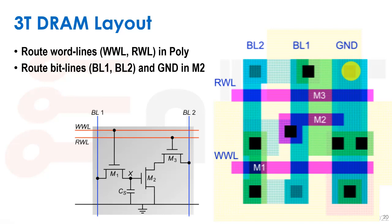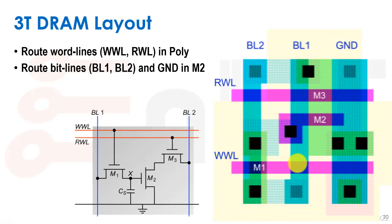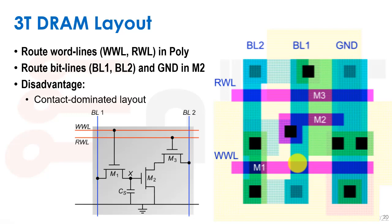Here's a layout of the 3T DRAM. The read word line and write word line are routed in poly layers, the bit lines in metal two, with internal connections in metal one. The disadvantage is that we have a lot of contacts, which cause a larger bit cell. The 3T DRAM is really dominated by contacts.